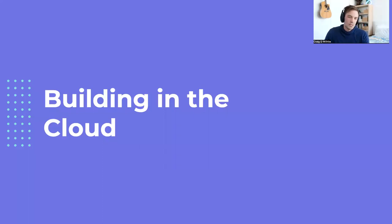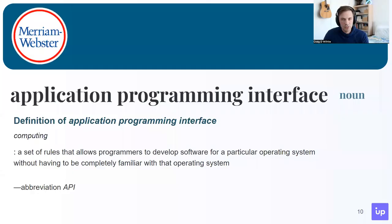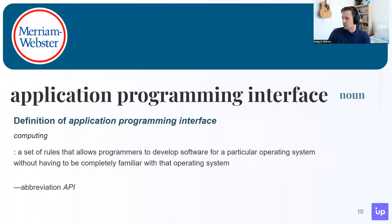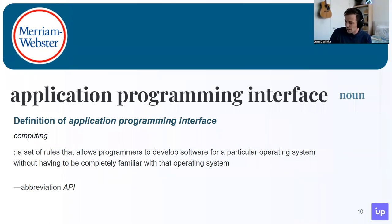Let's talk about building in the cloud, starting with a refresher on APIs — what the cloud is built on. Clouds, much like anything else in software, abide by the software contract called an API. Here's the Merriam-Webster definition: it's a set of rules that allows programmers to develop software for a particular operating system without having to be completely familiar with that operating system. As you think about going to the cloud, each cloud provider exposes their own API.